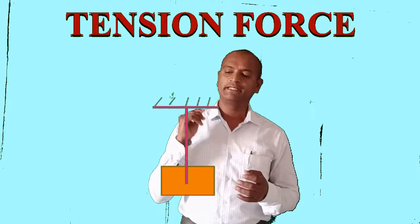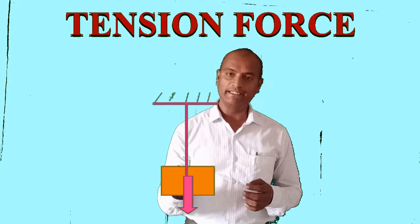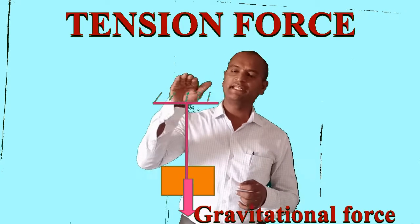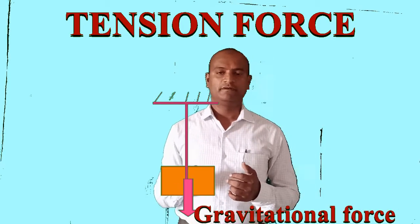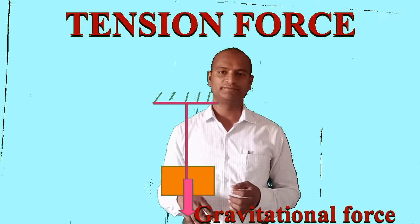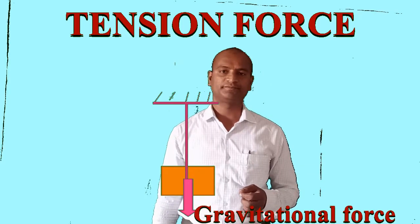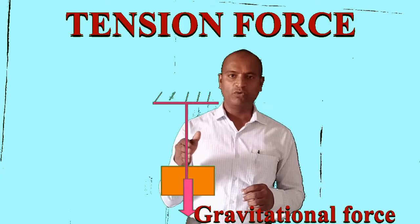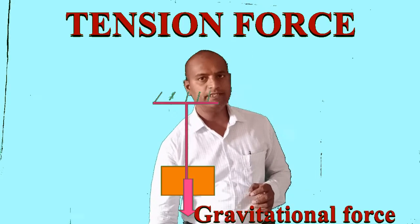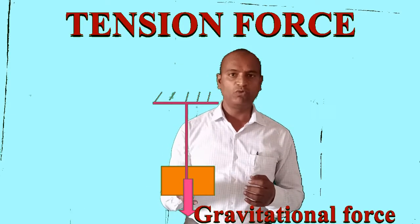Gravitational force is acting on the suspended object. What will happen when the string is broken? The stone would fall down due to gravitational force. Even when the stone is tied to the string, gravity pulls the stone all the time, but it does not fall down — why?